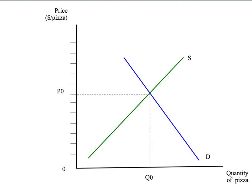To pick a concrete example let's look at the market for pizza. We have the quantity of pizza on the horizontal axis and the price of pizza on the vertical axis. Suppose that initially we don't have any sales tax on pizza. We have our supply curve and demand curve for pizza and our original equilibrium is given by P naught as the price and Q naught as the quantity traded.